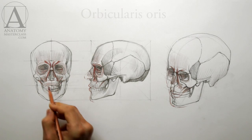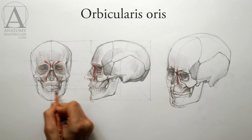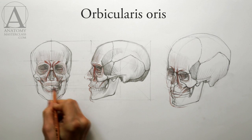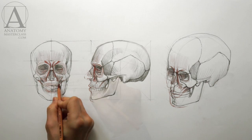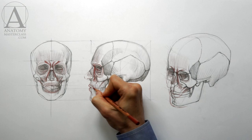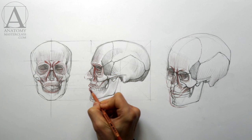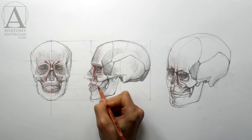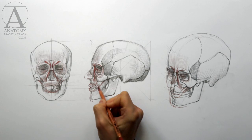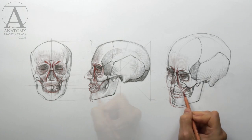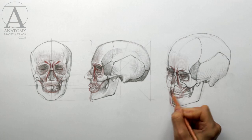The primary mouth muscle is called the orbicularis oris. It has an oval shape and goes around the mouth, forming the lips. The main action of this muscle is to close the lips. Many other muscles intervene with this mouth muscle. Together, they move the mouth into different positions and contribute to lip movements and speech.